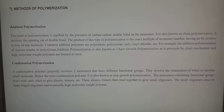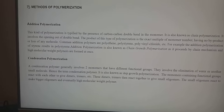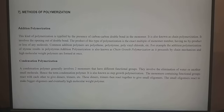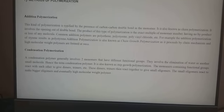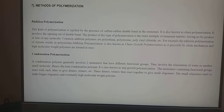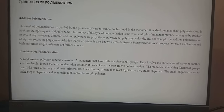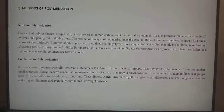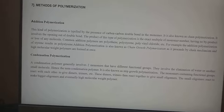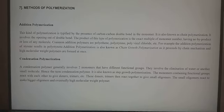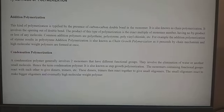Revisiting the methods of polymerization: addition polymers are typified by the presence of carbon-carbon double bonds in the monomer, and are also known as chain polymerization. In addition polymerization, the reaction proceeds by a chain mechanism and high molecular weight polymers are formed at once. Condensation polymers generally involve two monomers with different functional groups and involve the elimination of water or another small molecule, hence they are also known as step-growth polymerization. Monomers containing functional groups react to give dimers, trimers, and small oligomers, which then react to make bigger oligomers and eventually high molecular weight polymers.